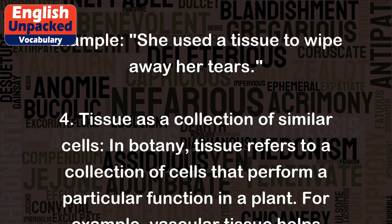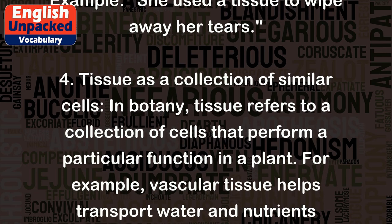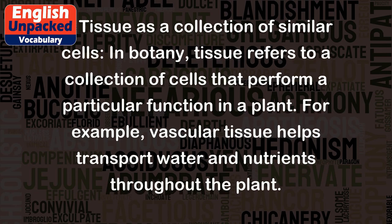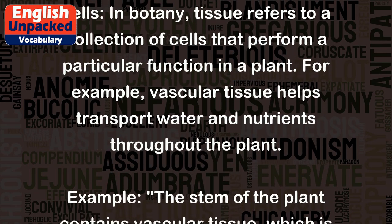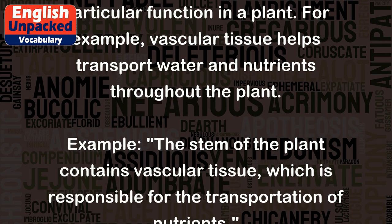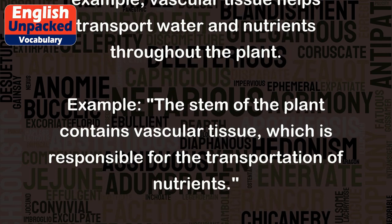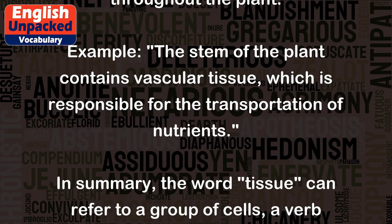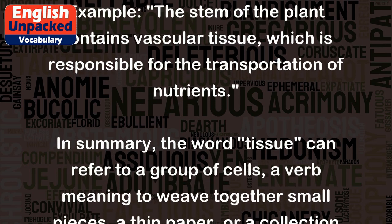4. Tissue as a collection of similar cells. In botany, tissue refers to a collection of cells that perform a particular function in a plant. For example, vascular tissue helps transport water and nutrients throughout the plant. Example: the stem of the plant contains vascular tissue, which is responsible for the transportation of nutrients.